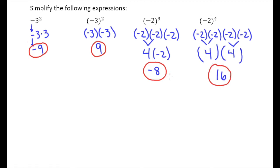In general, if you have a negative in parentheses raised to a power: if that power is even, you get a positive number; if that power is odd, you get a negative number. And if there are no parentheses, just raise the number itself to the power and let that negative go along for the ride.